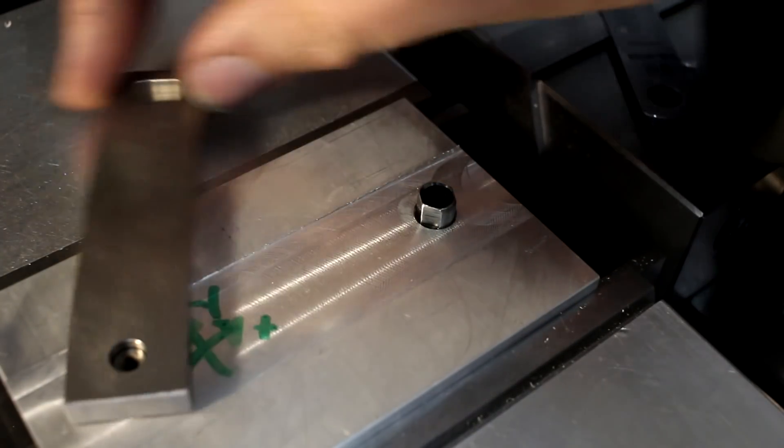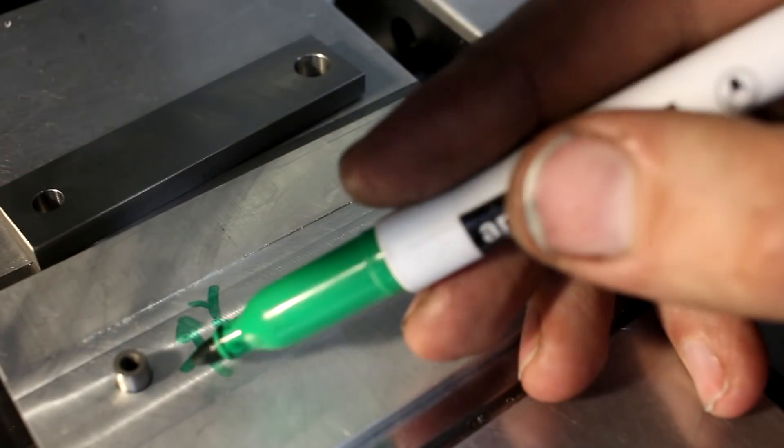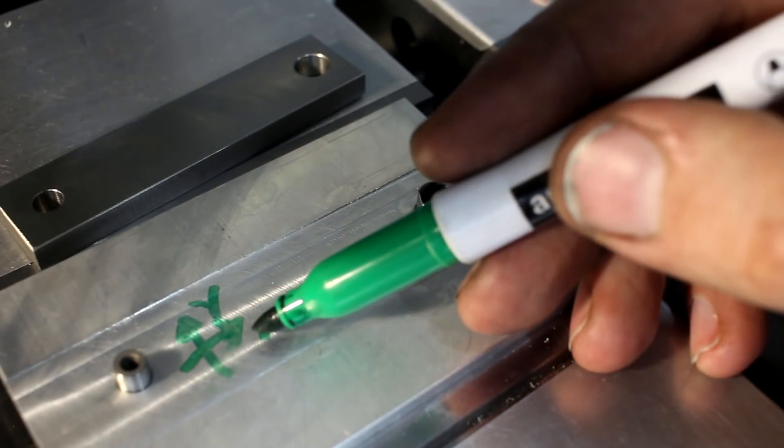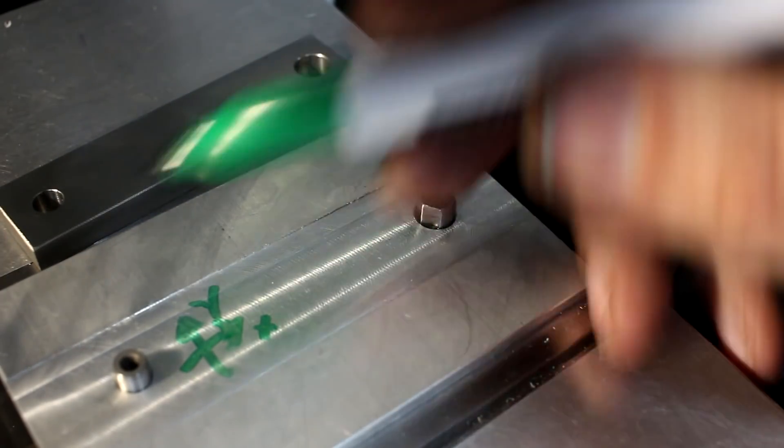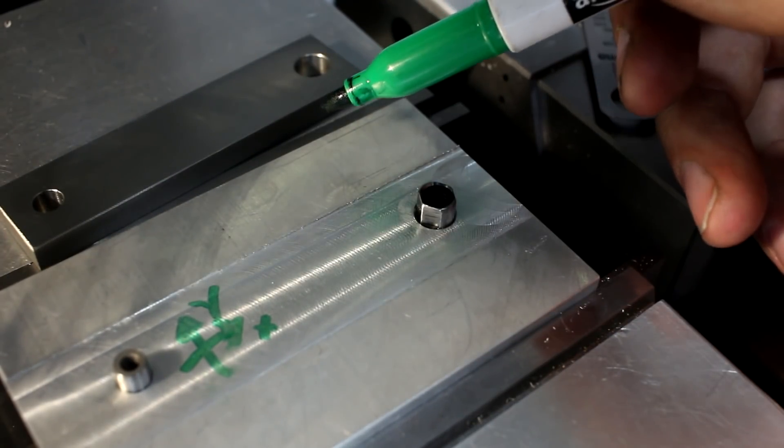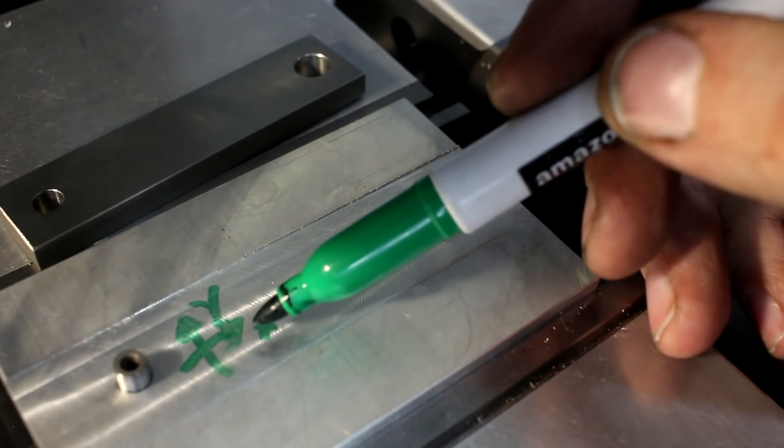A second pin would do the same, would locate the other feature in X and Y and also remove the rotating ability of the part. The problem is it would be over-constrained because we have X and Y twice.